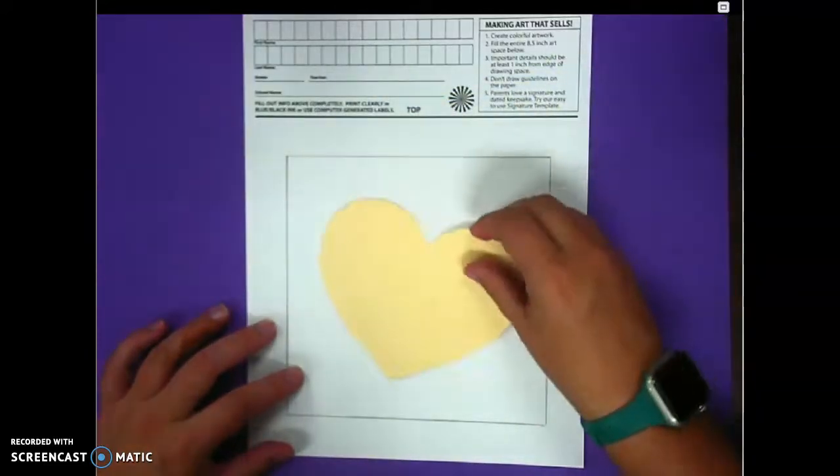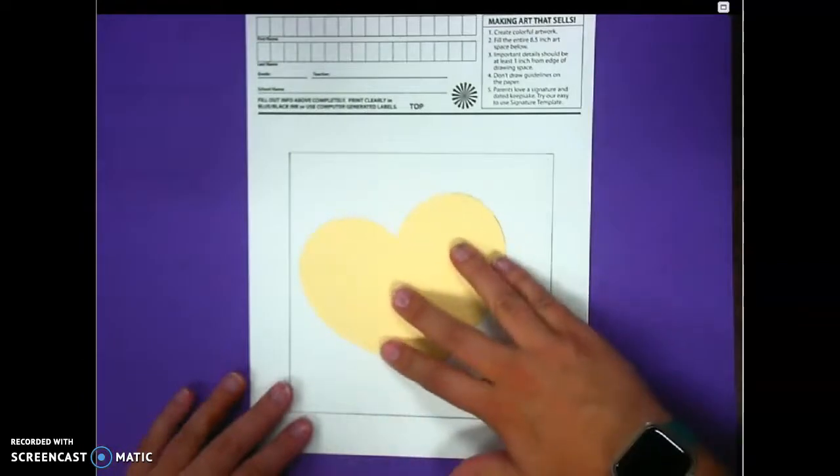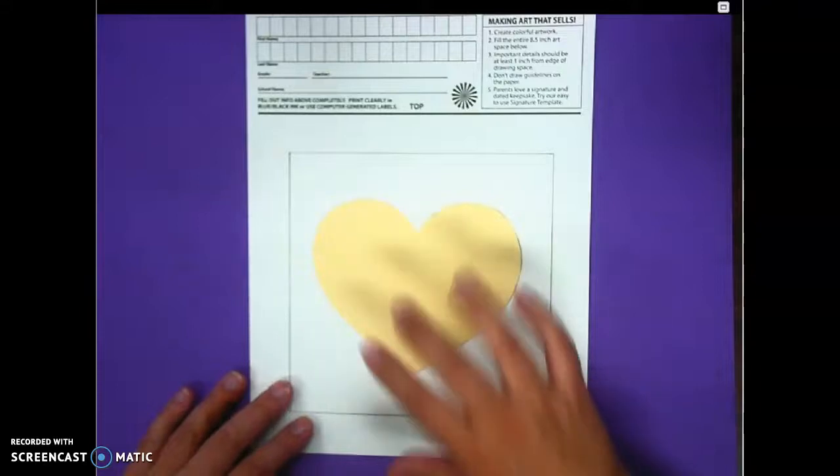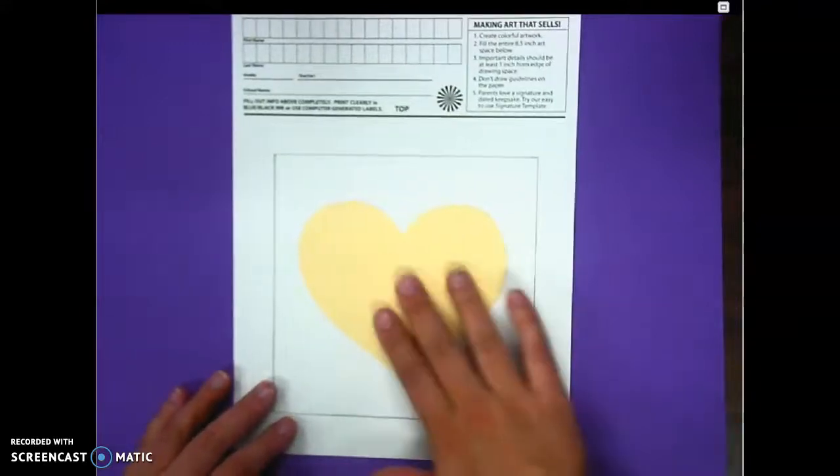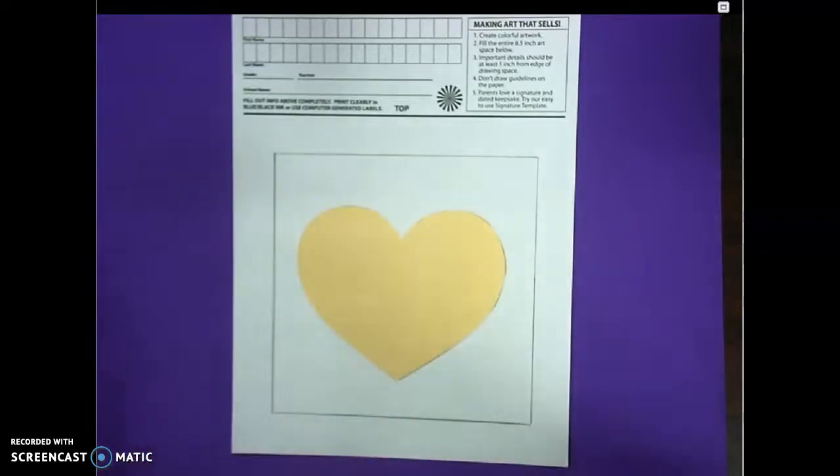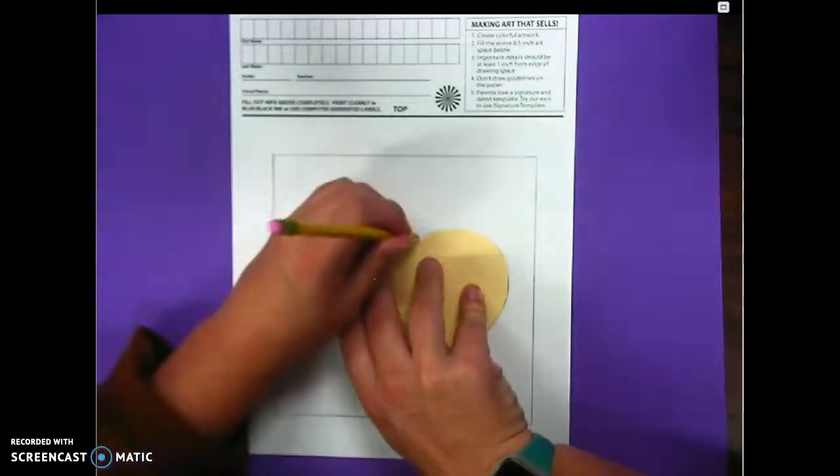Next we're going to make our hearts. You can make them lean to the left, lean to the right, you can make them in the center. That's up to you but we don't want them going off of the border. Hold your stencil down when you trace.